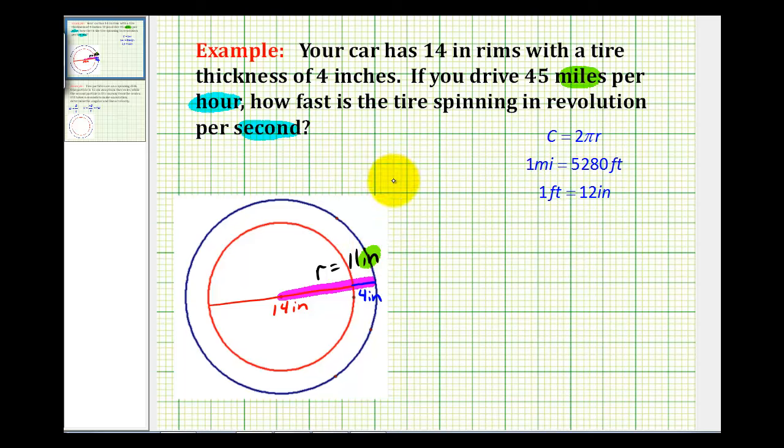So what we're going to do is determine how many inches per second you're traveling when you're traveling 45 miles per hour, and then we'll divide that by the distance traveled by one revolution of this tire, and one revolution would actually be the circumference of this outer circle. So let's go ahead and set this up.